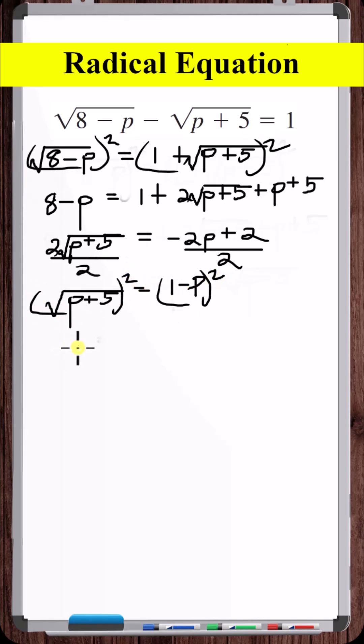Now, let's square both sides again. This simplifies to 1 minus 2p plus p squared. Now, let's get everything on one side and 0 on the other side.